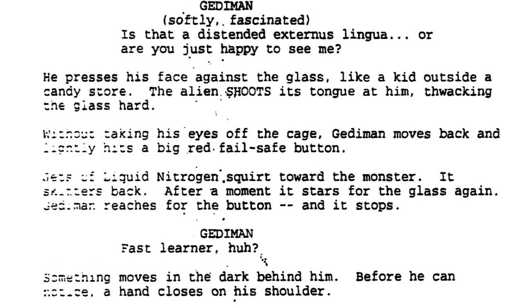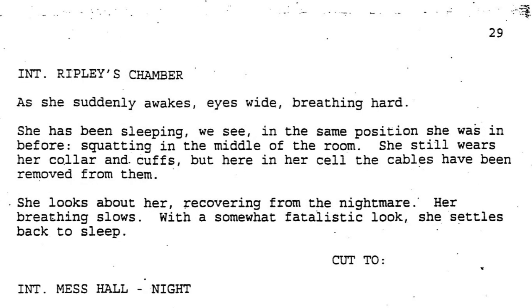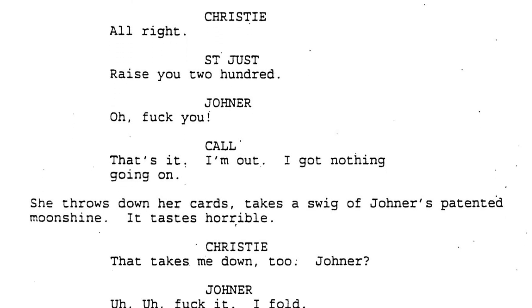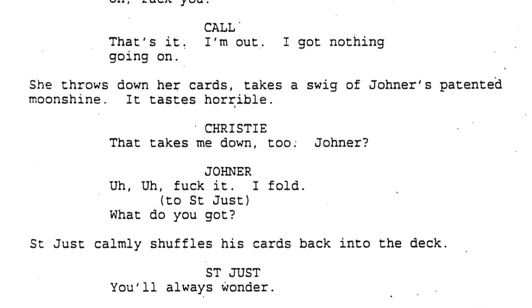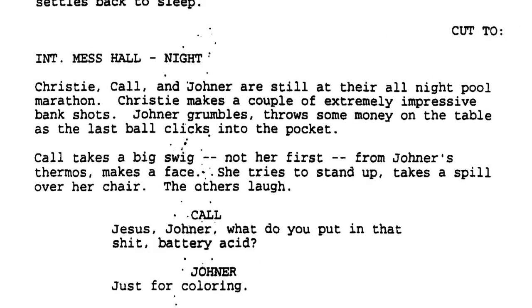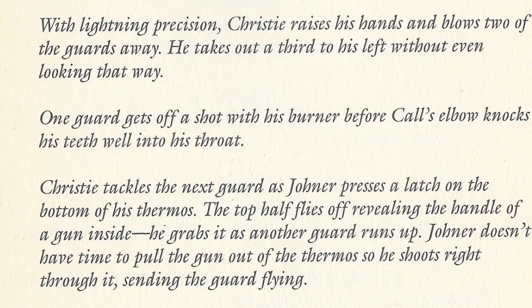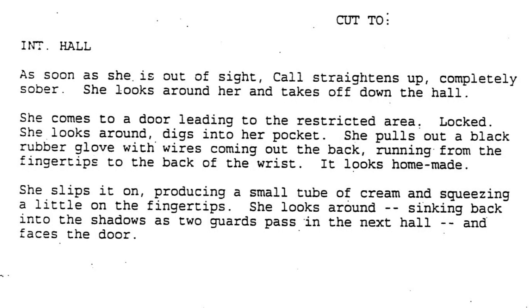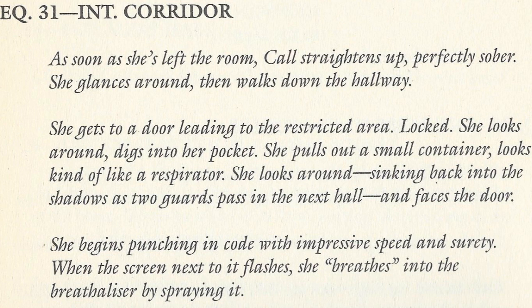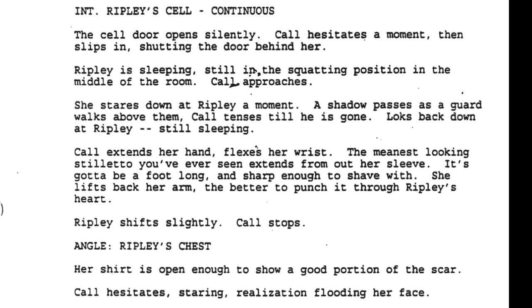It's not till the 1996 draft that Gediman zapping the alien with nitrogen is introduced. The next scene has Ripley waking in her cell, squatting in the middle of her room wearing a collar and handcuffs. Similar to the wheat dream, this dream seems to have no point or payoff other than to reinforce Ripley's dual nature — moreover, Ripley is absent from half the scene and it's focused on Gediman. In the undated and 95 drafts, Sen Eust wins a high stakes hand of poker, while in the 96 draft Christie shows off his pool skills with impressive bank shots. Call makes her way to the prison level to find Ripley using a power glove-type contraption to crack security — by the published script, the breathing security system is in place. Most of the scene where Call goes to murder Ripley survived relatively unchanged and intact in the film.